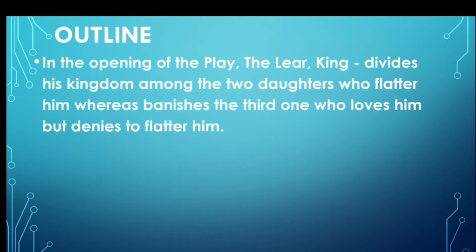What is the outline? In the opening of the play, King Lear divides his kingdom among the two daughters who flatter him, whereas he banishes the third one — Cordelia — who loves him the most but refuses to flatter him.